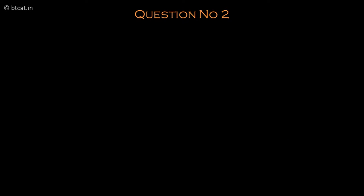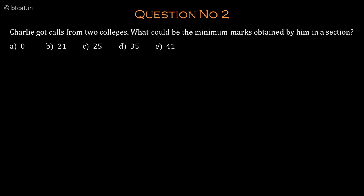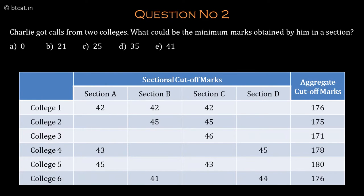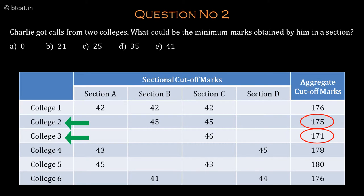Next question: Charlie got calls from two colleges — what could be the minimum marks obtained by him in any section? If you look at the aggregate cutoffs, the lowest two are 171 and 175. So if Charlie gets 175, he will clear the cutoff for the two colleges with the lowest aggregate requirements, which are college 3 and college 2. The job is to fit 175 marks while meeting the sectional requirements.